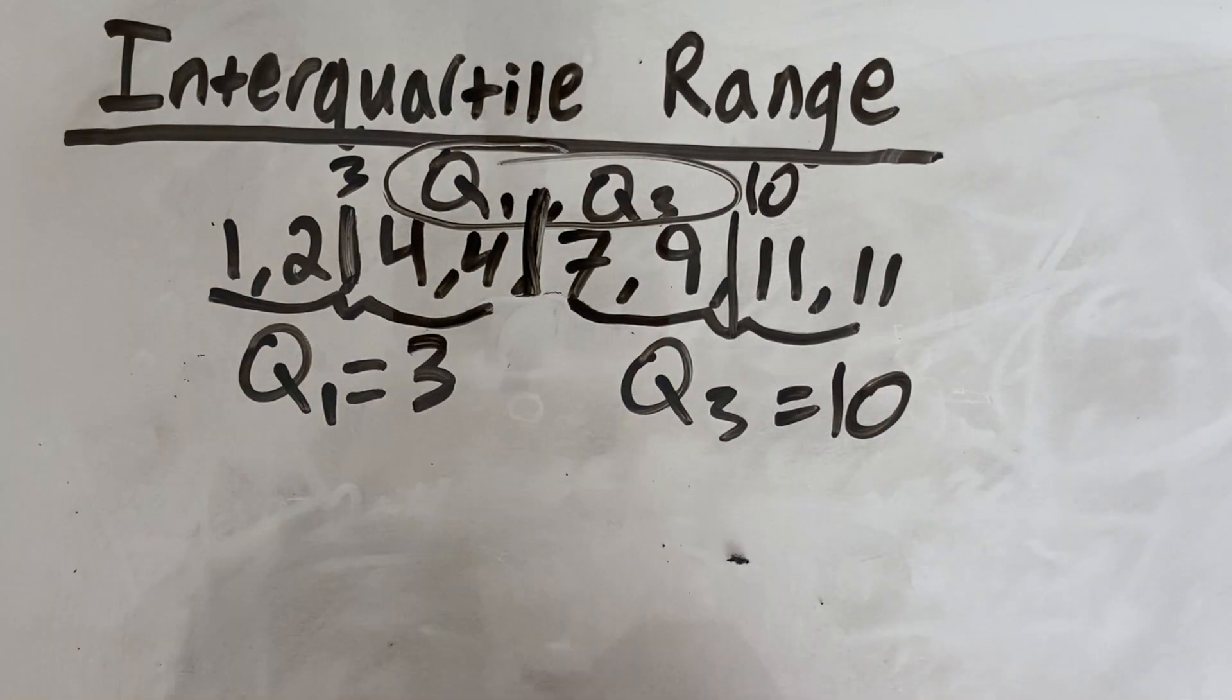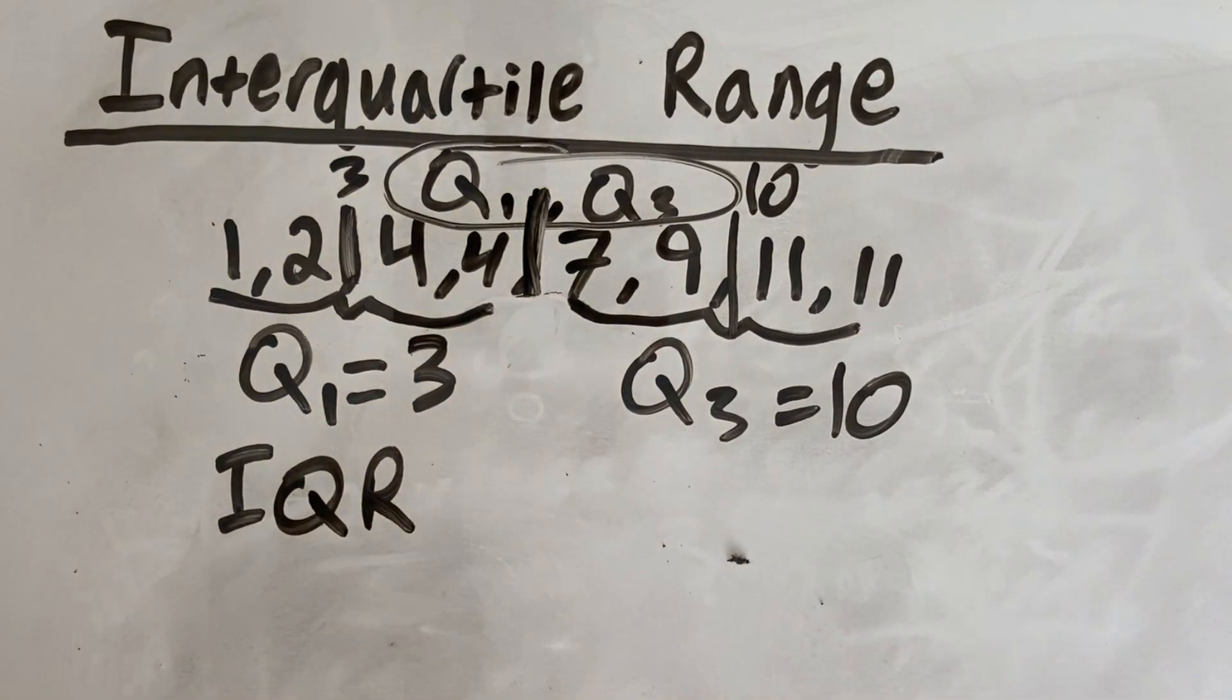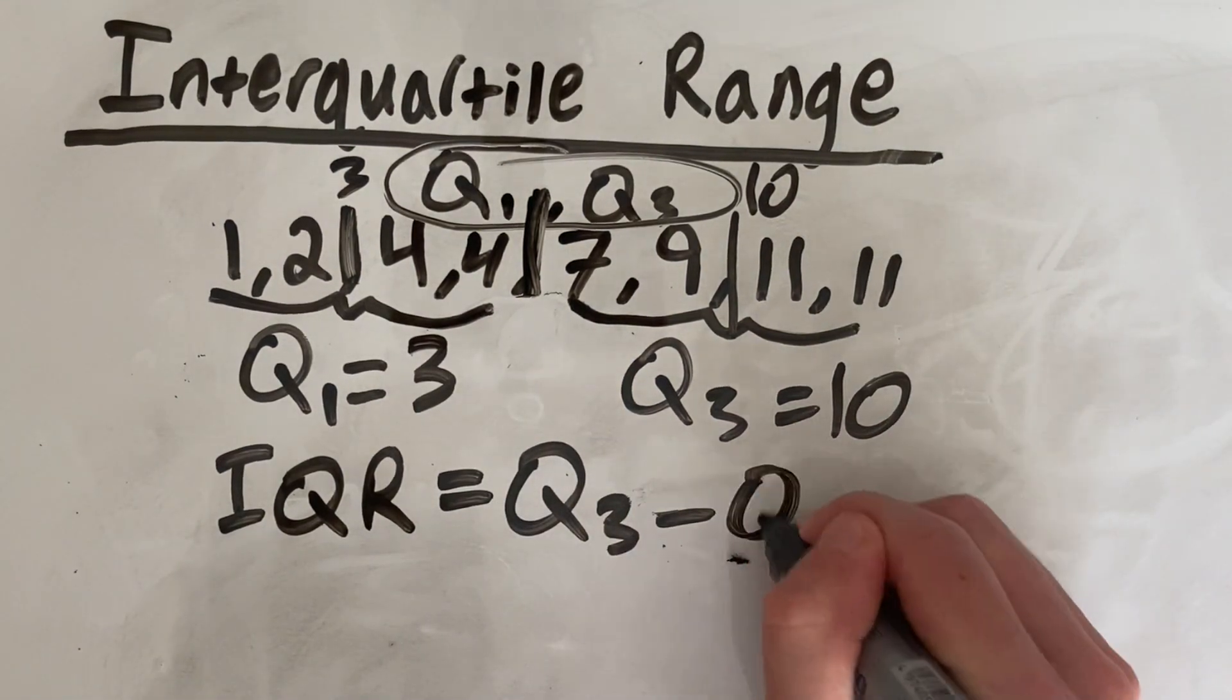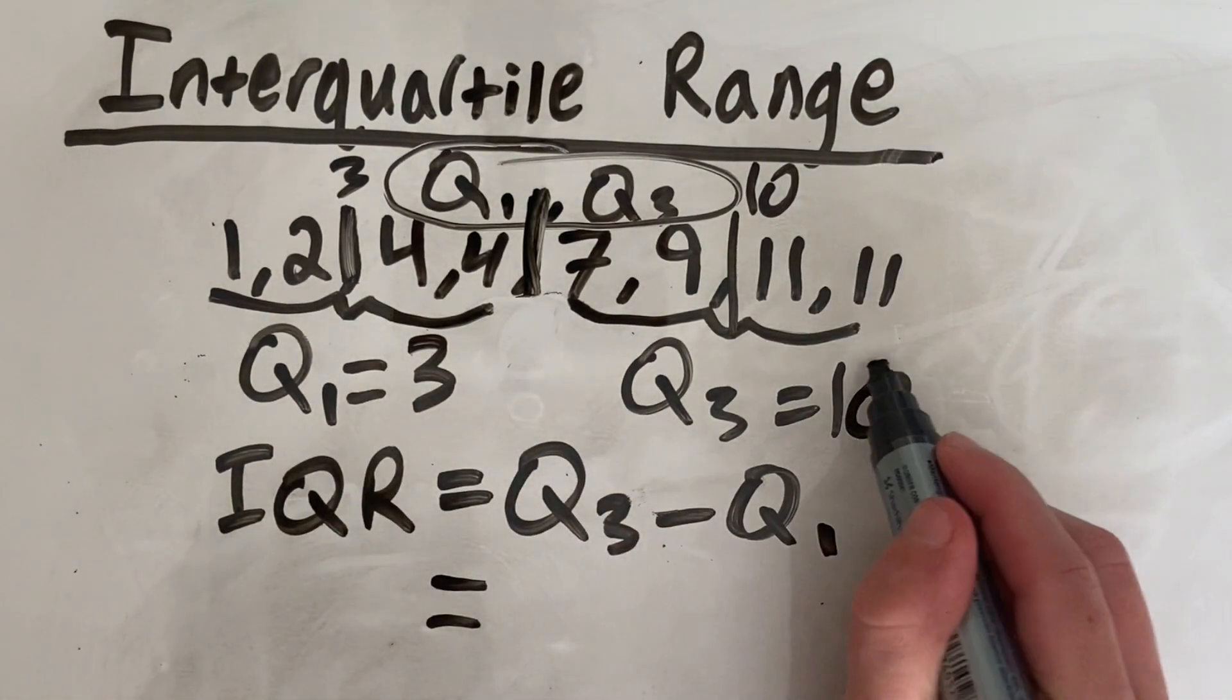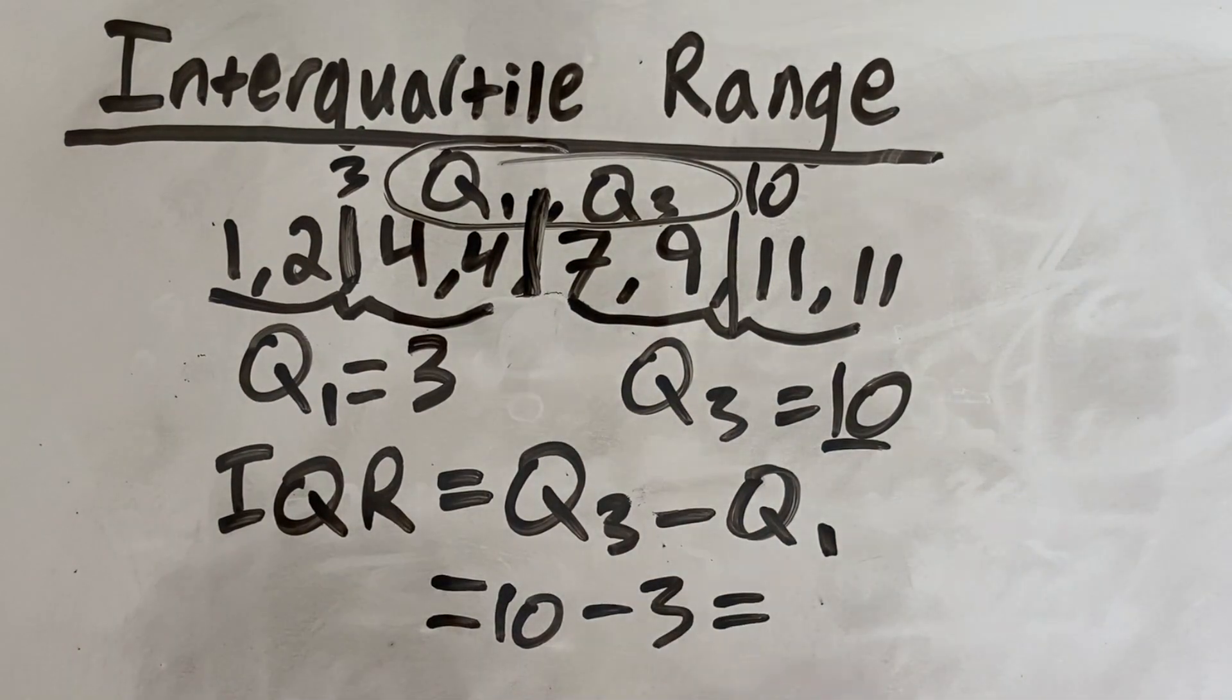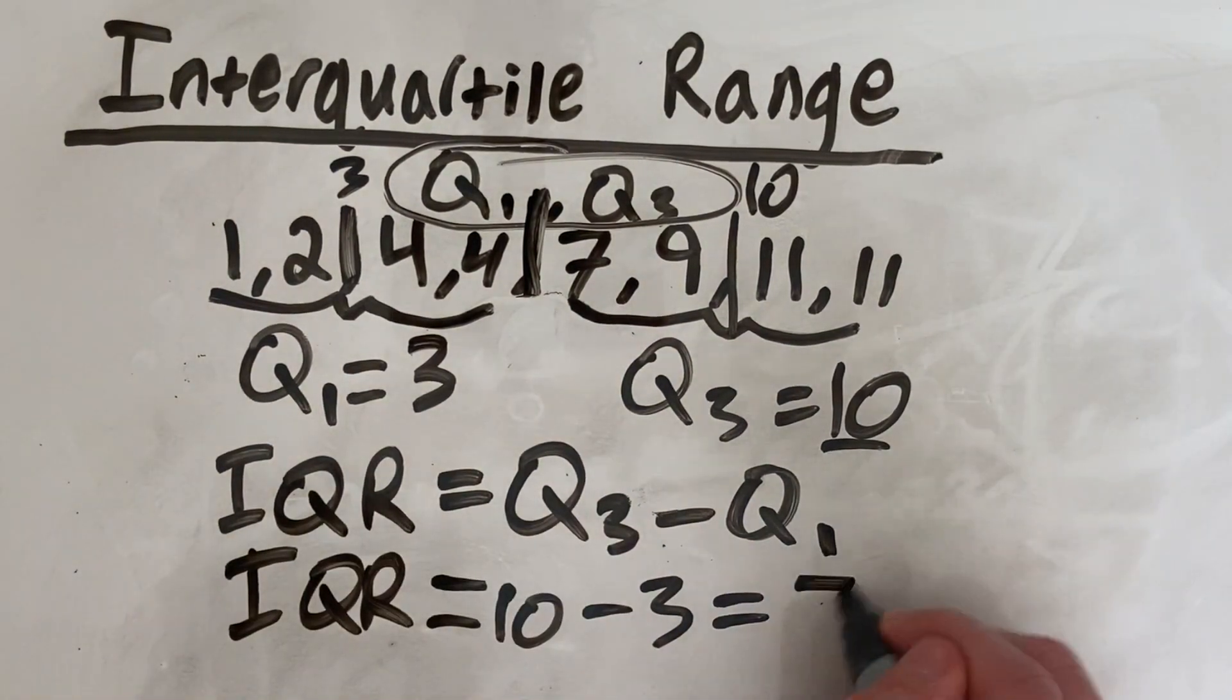And if you remember from before, your interquartile range, which you might see shortened to IQR, your IQR is equal to Q3, your third quartile, minus your first quartile. So that will simply be equal to our quartile 3, which is 10, minus our quartile 1, which is 3. Therefore, our interquartile range is equal to 7.